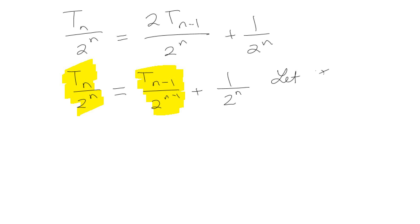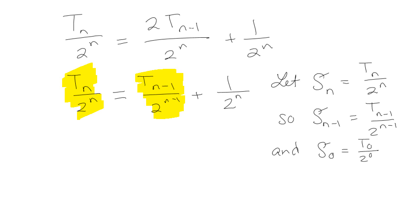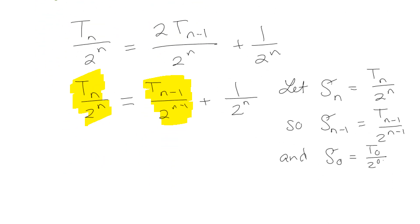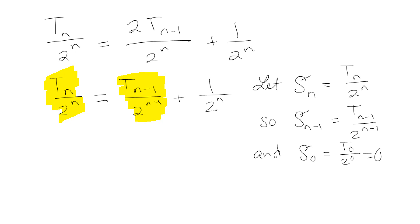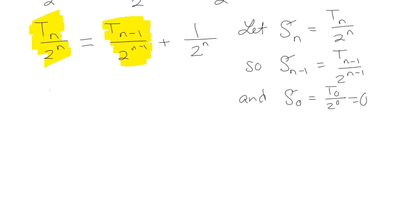So that's on purpose. So what we're going to do is create another term, S_n, that we're going to say is T_n over 2^n, which also means therefore that S_{n-1} has to be T_{n-1} over 2^{n-1}. And therefore, S_0 has to be equal to T_0 over 2^0, and T_0 is 0, so that means that S_0 is 0. So now we're going to go through here and rewrite, so we have S_n is equal to S_{n-1} plus 1 over 2^n, just like that.